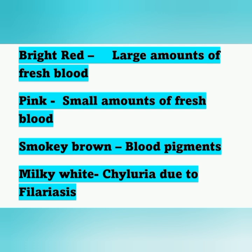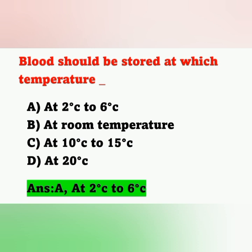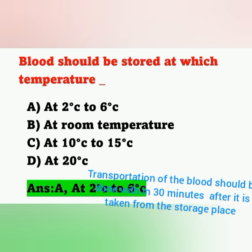Question 1: Blood should be stored at which temperature? Options: A) 2°C to 6°C, B) room temperature, C) 10°C to 15°C, D) 20°C. The correct answer is option A — blood is stored at 2 to 6 degrees Celsius.